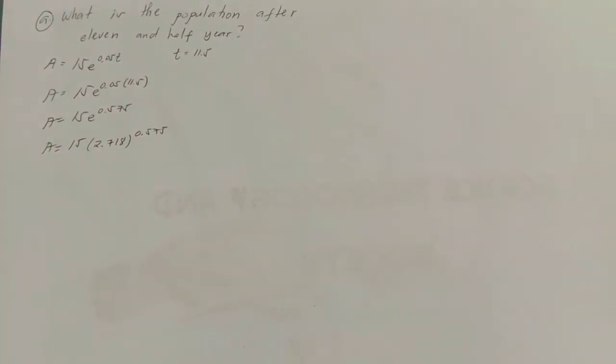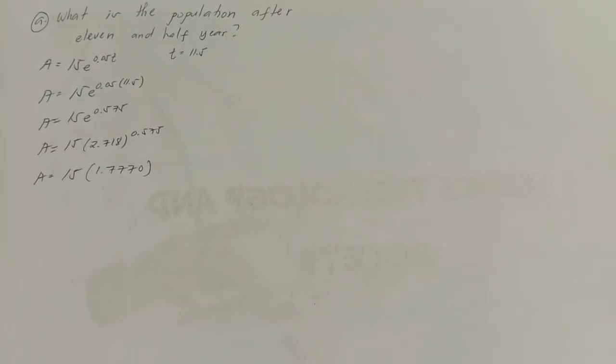Now, 15e raised to 0.575. We can input the value of Euler's constant. The value is 2.718 raised to 0.575. If we're going to input it to the calculator, the answer would be 1.777. We're going to round it off to 1.777.